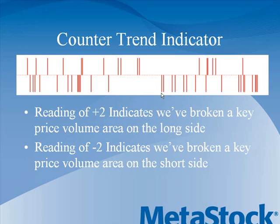So breaking out from clusters of volume, clusters of price, ranges — that's what's really creating the counter trend indicator to give you a buy or sell. Probably when the market is going down, this is going to be a lone ranger giving you a buy setup. And that's very interesting.